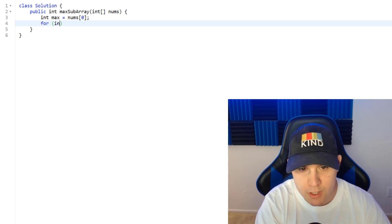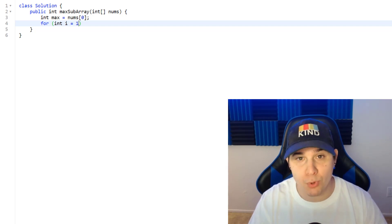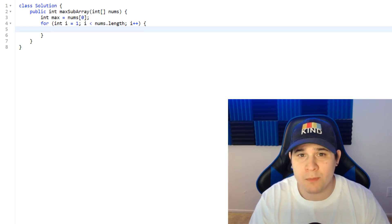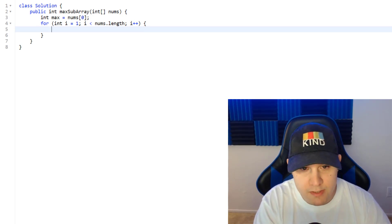And then now we're going to actually loop over our array. So we can say for int i starting at index one. We're starting at index one because we already pulled the value at index zero. So we can say i is less than nums dot length, i plus plus.